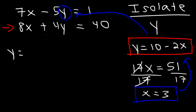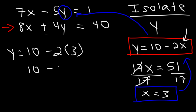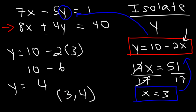Let's replace x with 3: y is equal to 10 minus 2 times 3. 2 times 3 is 6, and 10 minus 6 is 4. So y is 4. Our answer as an ordered pair is 3 comma 4. x comma y.